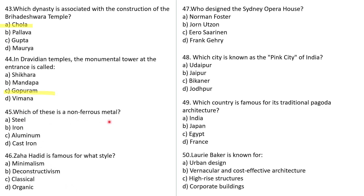Question number 45: Which of these is a non-ferrous material? Very easy — just try to answer it. Question number 46: Zaha Hadid is famous for what style? Also a very easy question. Question number 47: Who designed the Sydney Opera House? Options: Norman Foster, Jørn Utzon, Eero Saarinen, or Frank Gehry. The correct answer is Jørn Utzon. Question number 48: Which city is known as the Pink City of India? Very easy — just answer it. Question number 49: Which country is famous for traditional pagoda architecture? A: India, B: Japan, C: Egypt, D: France. The answer is B — Japan.